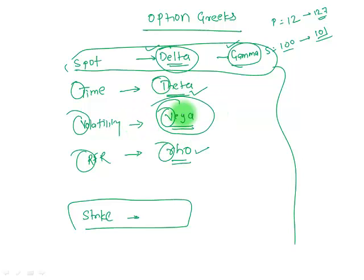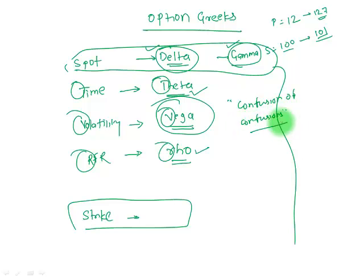One hypothesis for why it's called Vega is that the V makes it easier to remember. A second hypothesis references a book called 'Confusion of Confusions,' written by an author whose name was Vega, and therefore the impact of volatility may be named after him. We don't know the definitive theory, but the relationship between volatility and price of option is given by Vega.